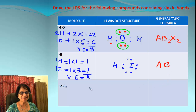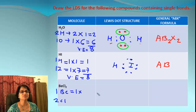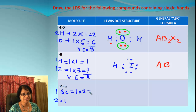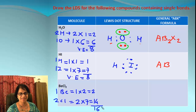Let's move on to beryllium chloride — 1 beryllium and 2 chlorines. Beryllium belongs to group 2, so it will bring 2 electrons. Chlorine is in group 17, so 2 chlorines will bring 2 times 7 — 14 electrons. The total of 2 and 14 is 16. So we have 16 electrons for our potluck.